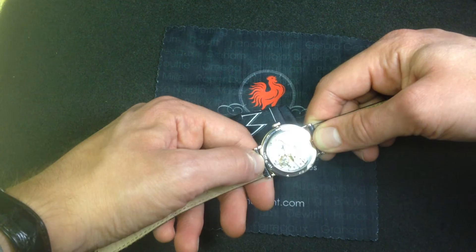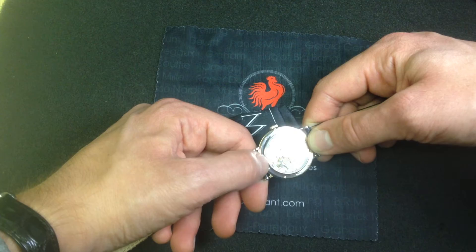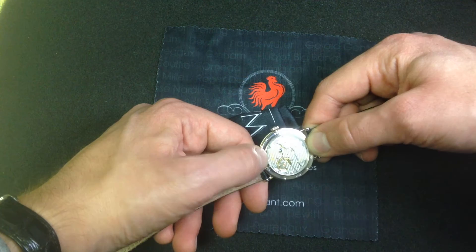This is the later, more desirable version of the Breguet Classique reference 5907. In this case, you're getting the 511 DR, not the 510 DR caliber, and the difference is stark.